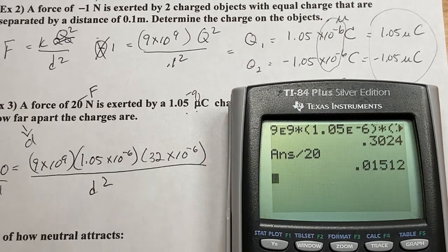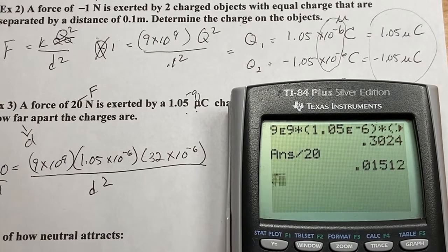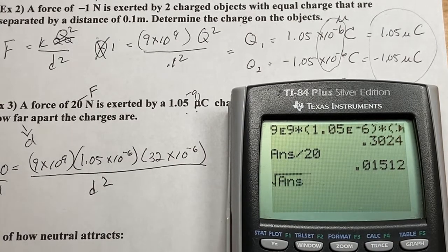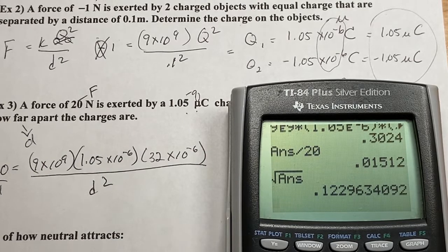And now I have to take the square root. Second square root. Second answer. There we go. 0.12 meters.